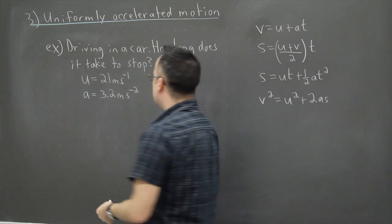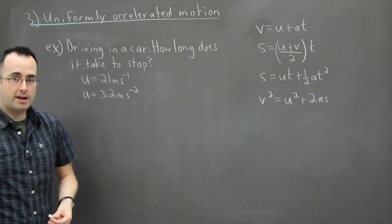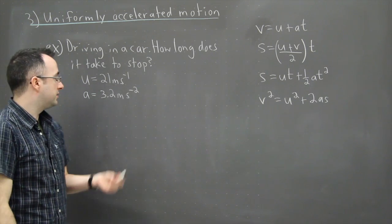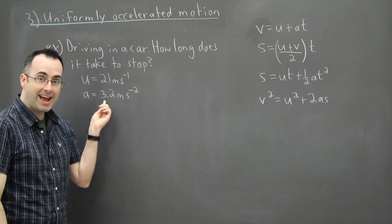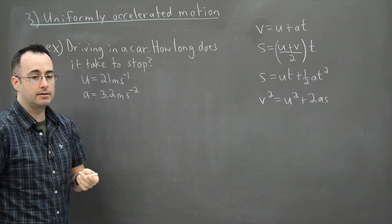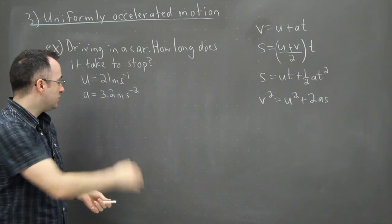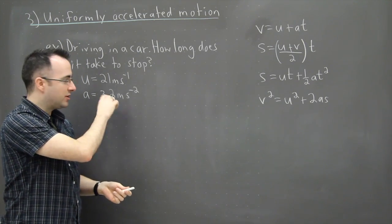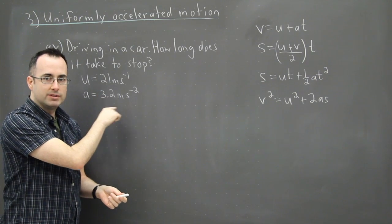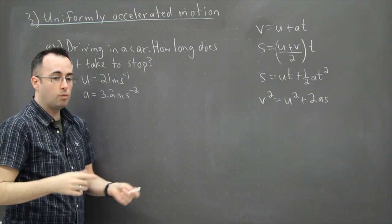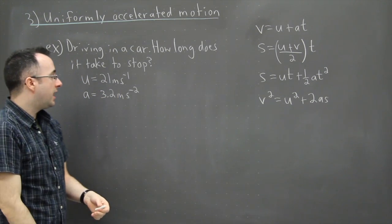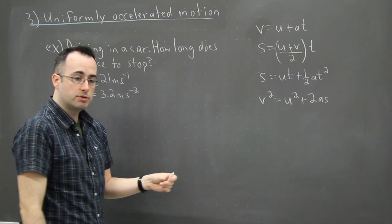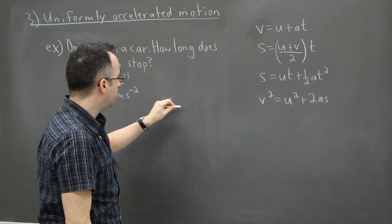So the very first thing then is to look at do I have uniformly accelerating motion? Yep. The very fact that I have acceleration implies accelerated motion. And it's uniform and it's not changing. This value isn't any different. It's always going to be 3.2 while I'm slowing down.